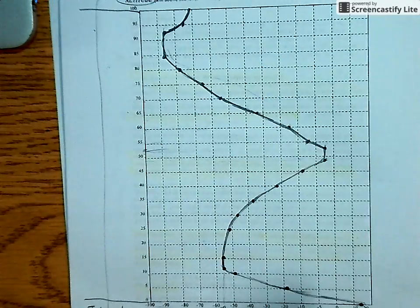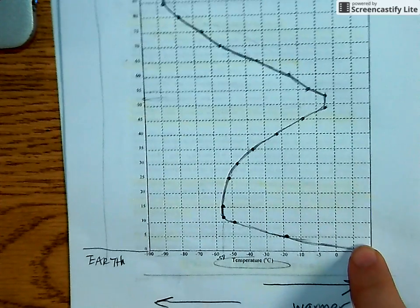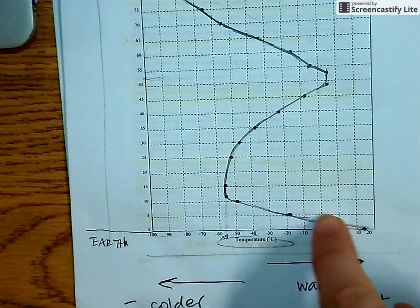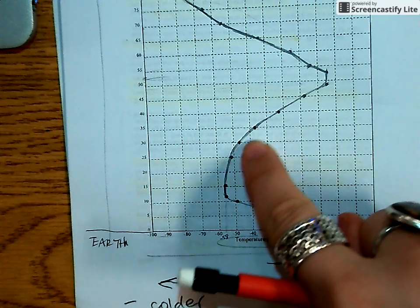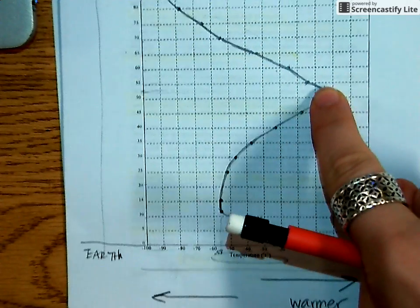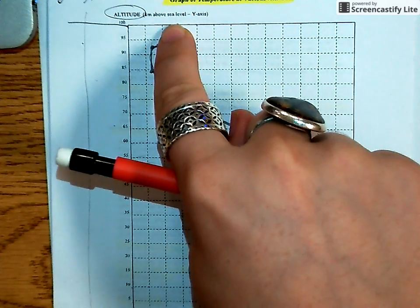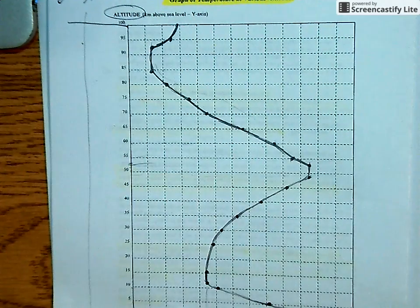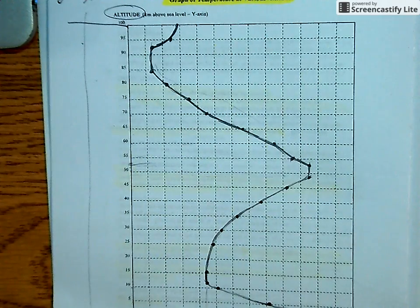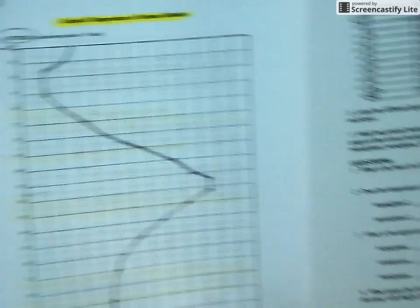Okay, and so as we go from Earth, temperature is getting colder, and then it switches and gets warmer, and then it switches, and then it gets colder, switches, and then it gets slightly warmer. And we don't have the rest because it said in the reading that thermometers don't really work that well.